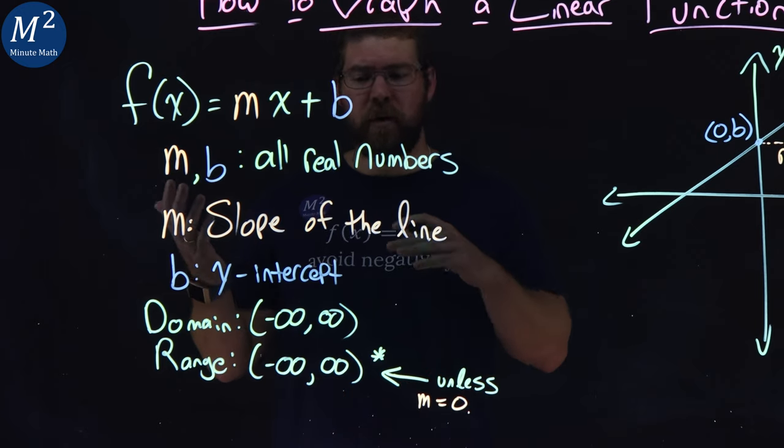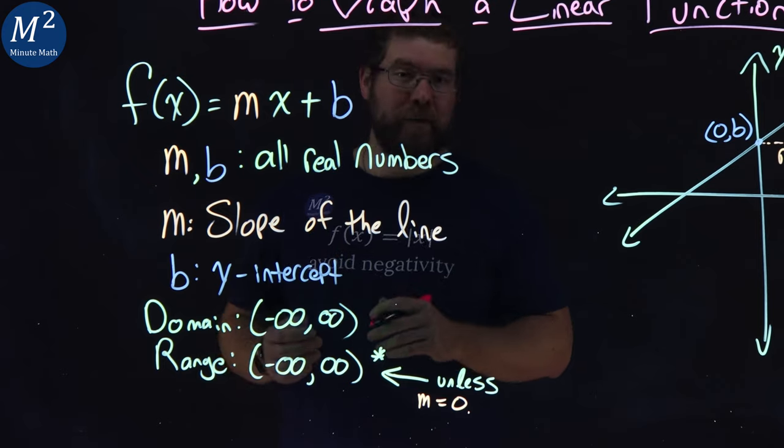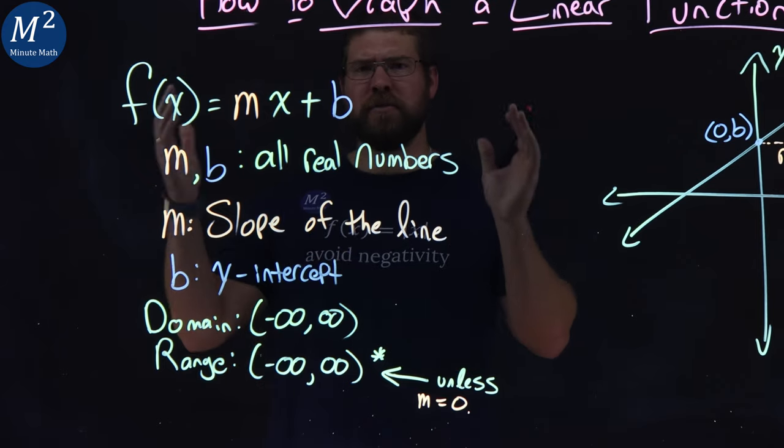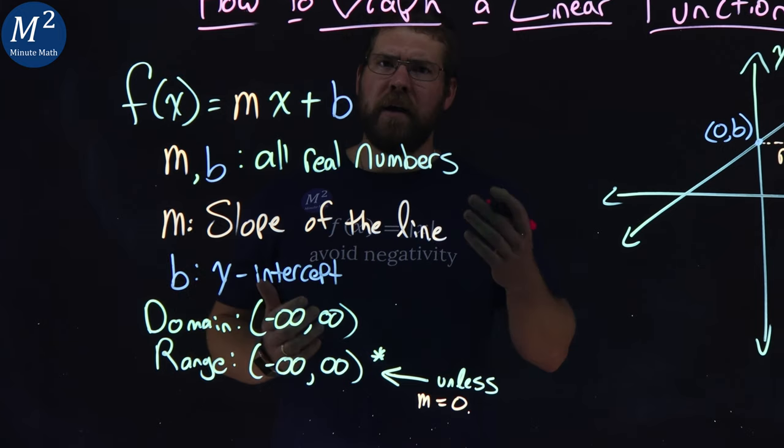If our slope is equal to zero, our range will only be the value of our b value, and that's it. But everything else, any other slope out there, you'll have a range from negative infinity to positive infinity.